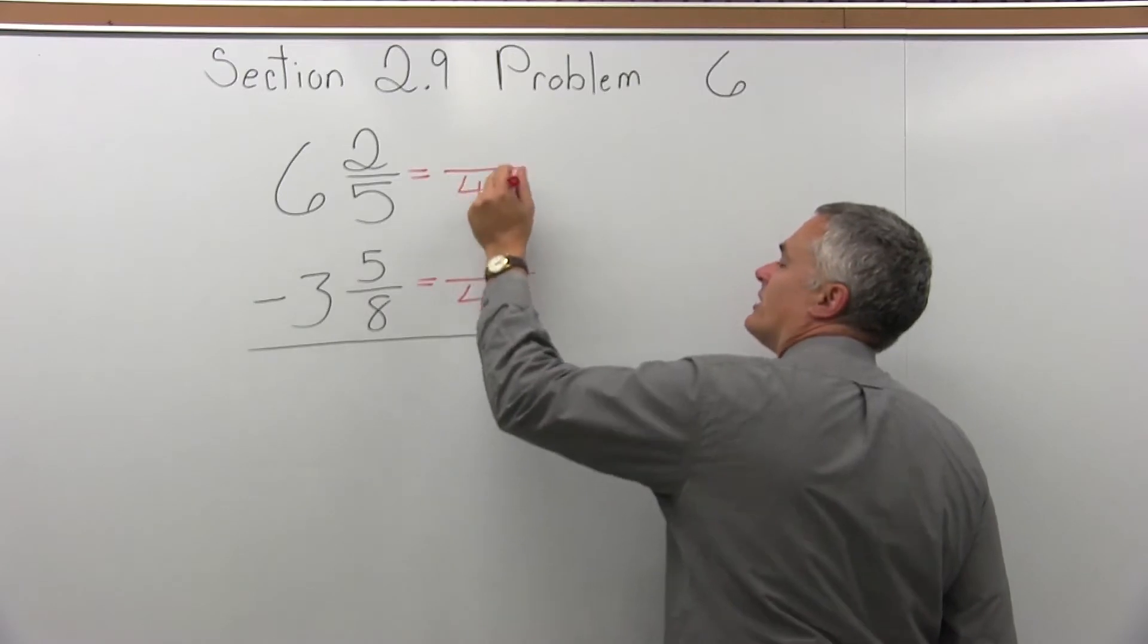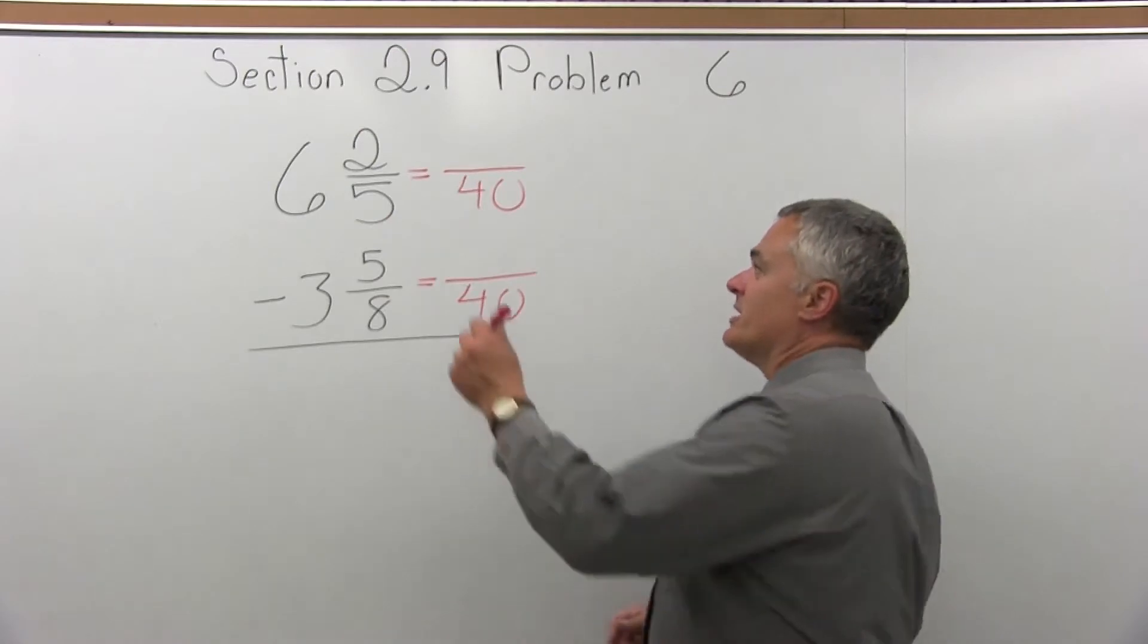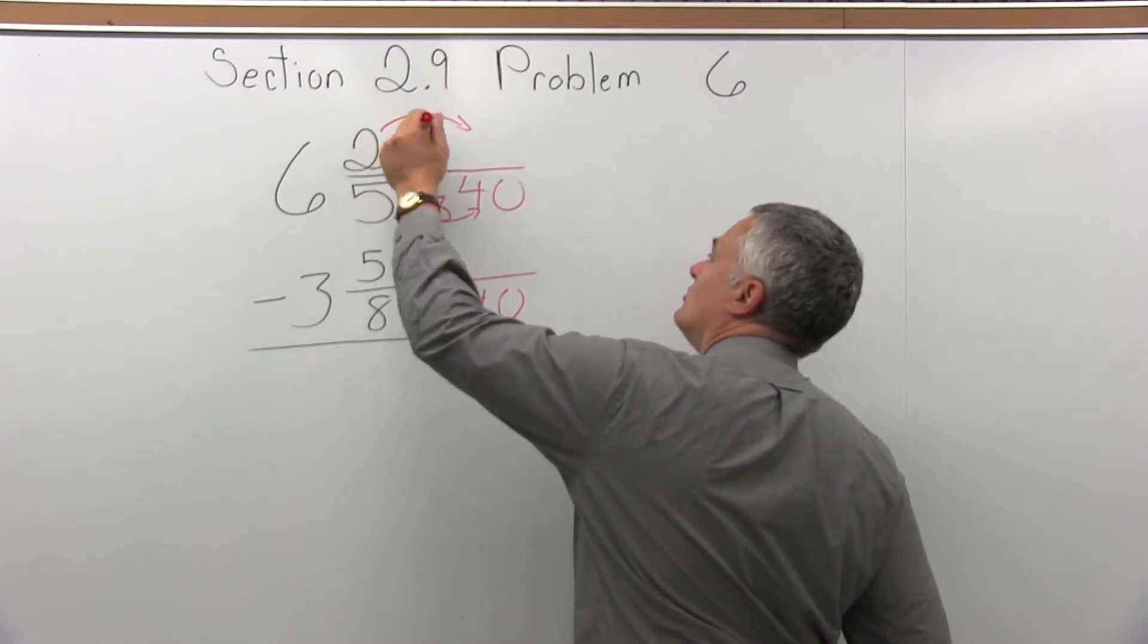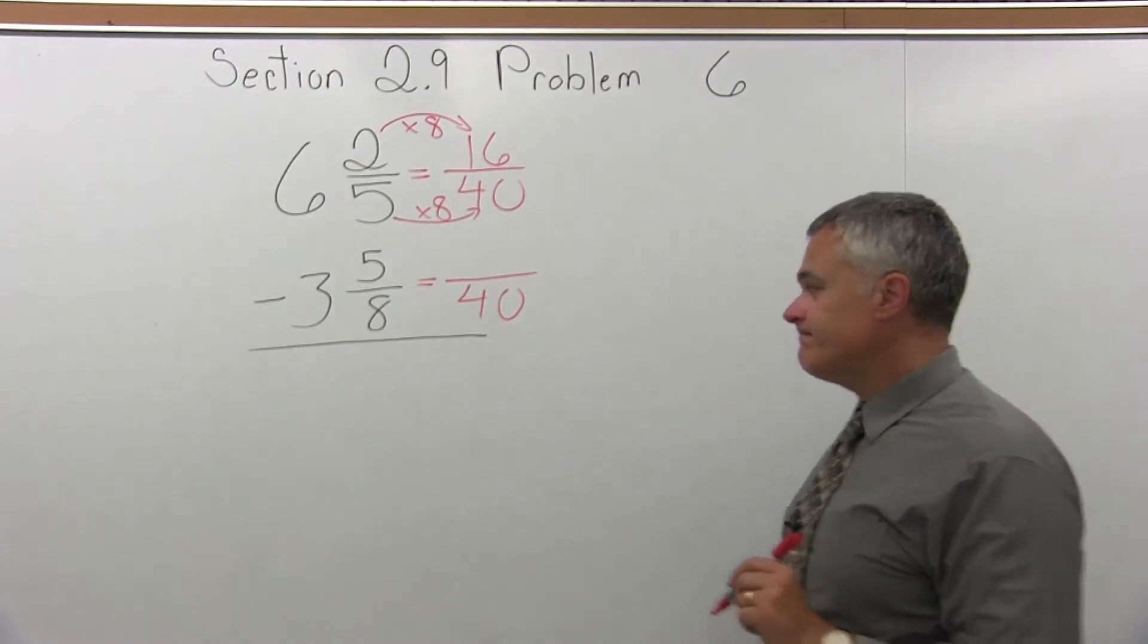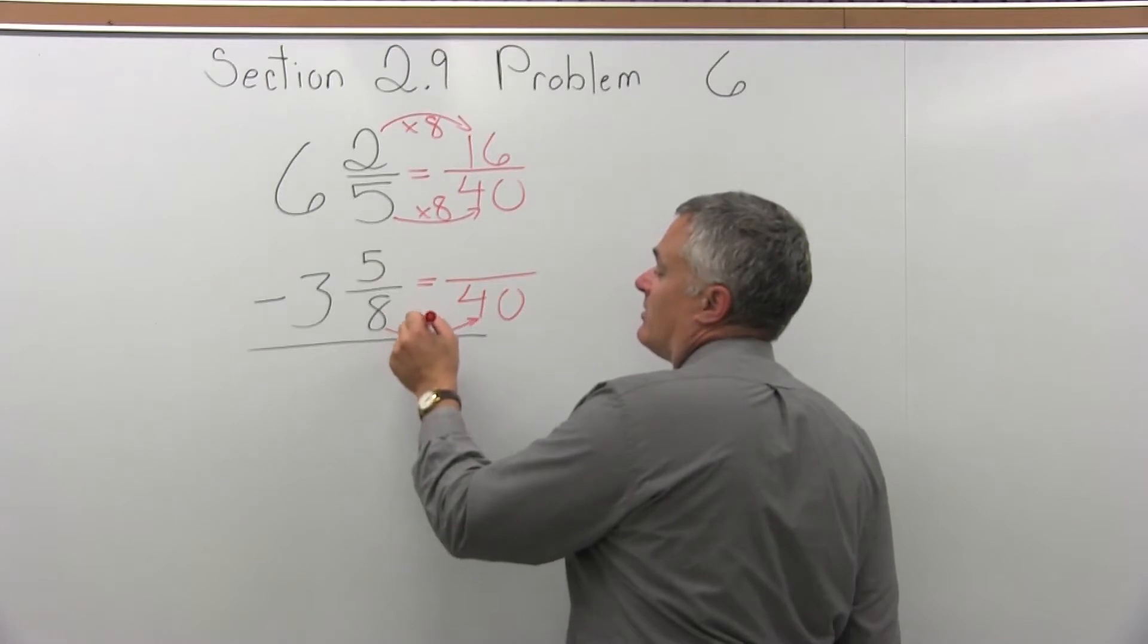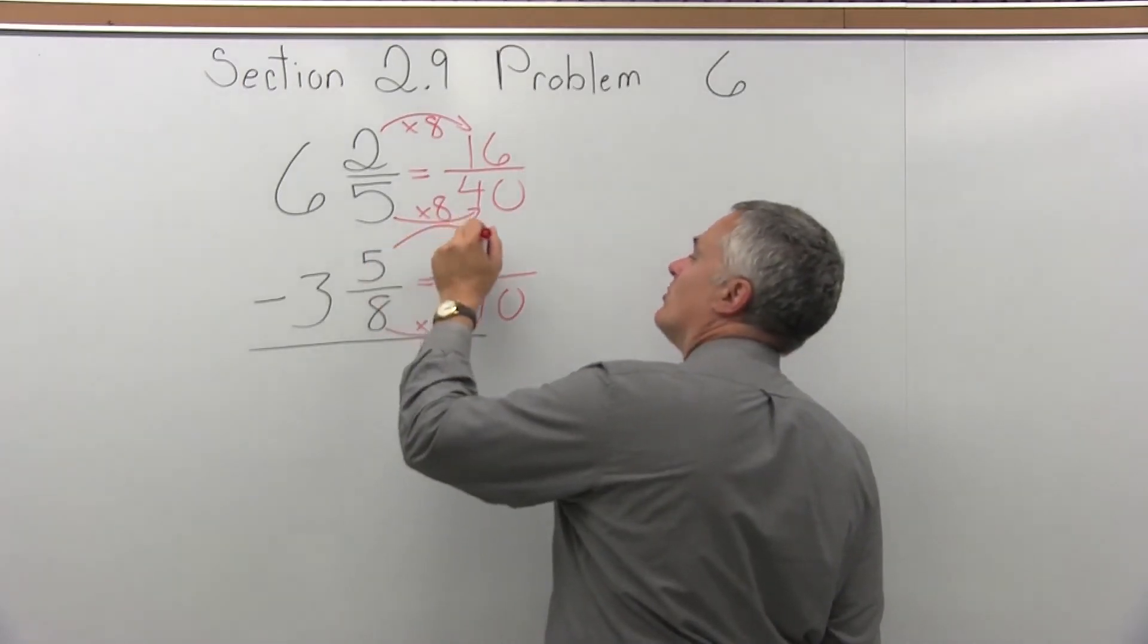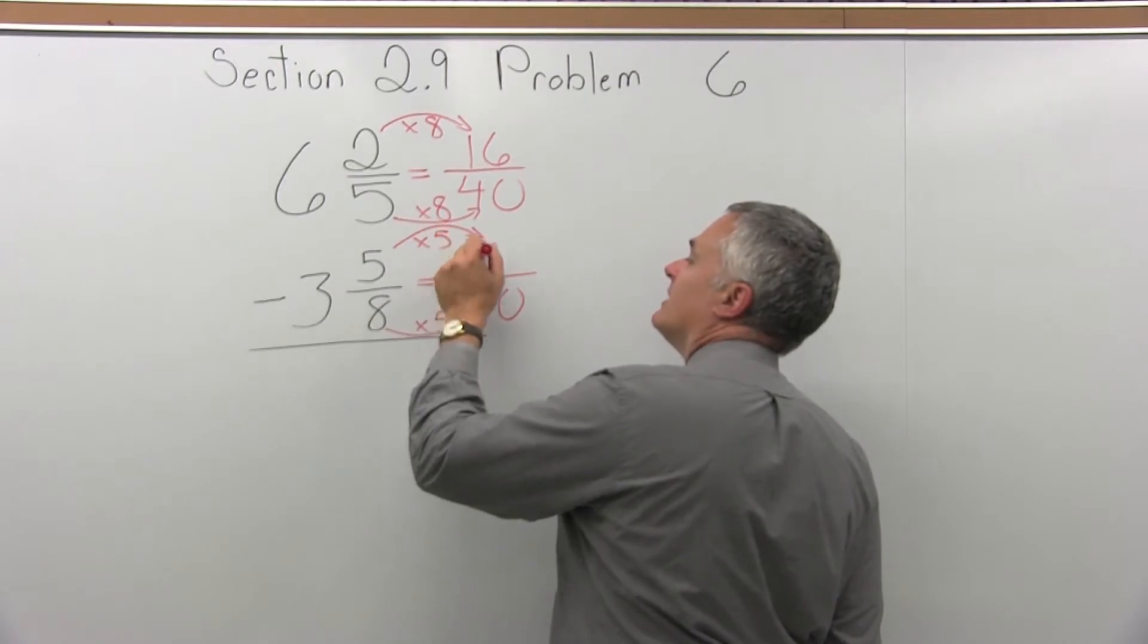So let's find the numerators. For the upper fraction, 5 times some value made 40, so it must have been times 8. 5 times 8 is 40. So the numerator must get multiplied times the same value, times 8. 2 times 8 is 16. Now, for the lower fraction, the denominator times some value made 40, so 8 times something is 40. It must have been times 5. 8 times 5 is 40. So the numerator gets multiplied times the same value. 5 times 5 is 25.